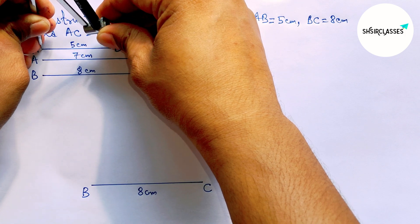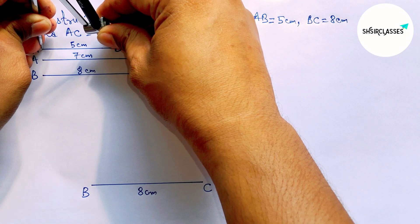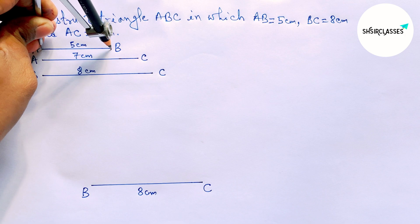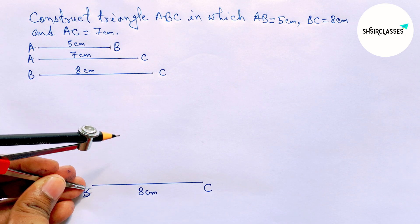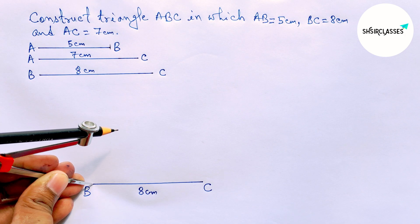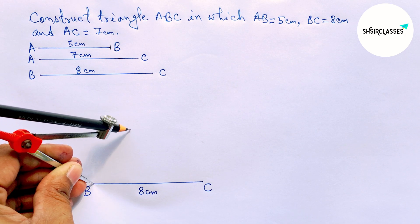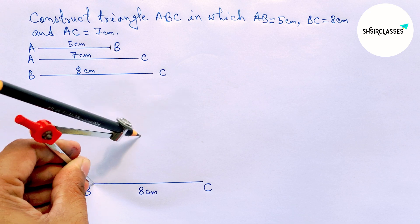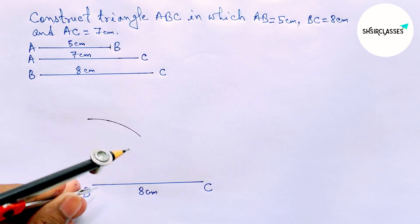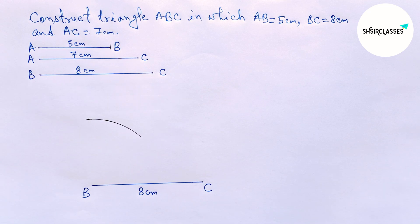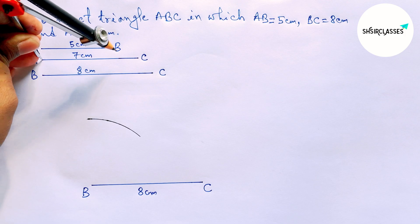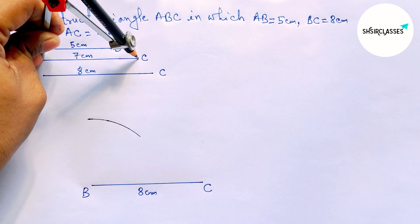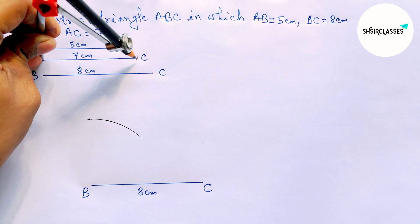Now putting the compass on the point C and drawing an arc. Next, taking AC equals 7 centimeters with the help of the compass.